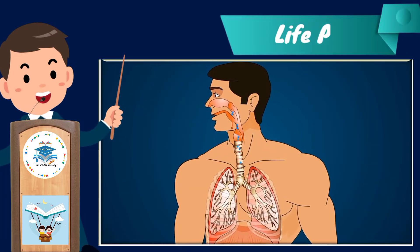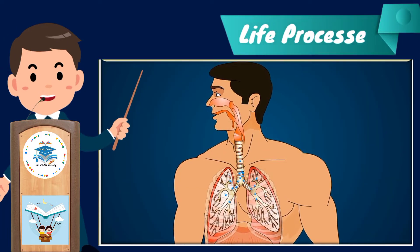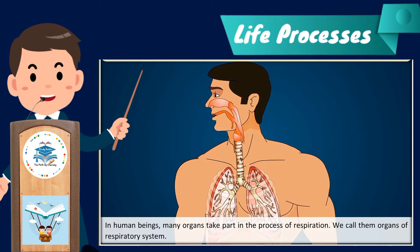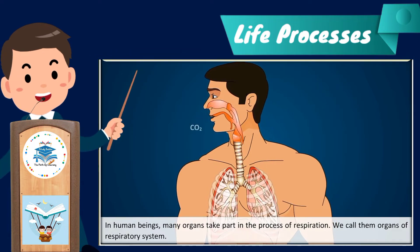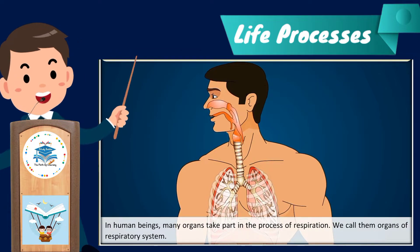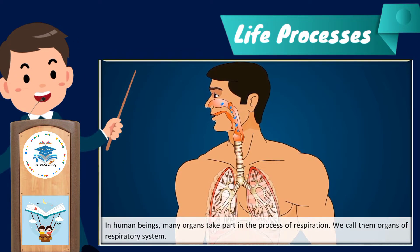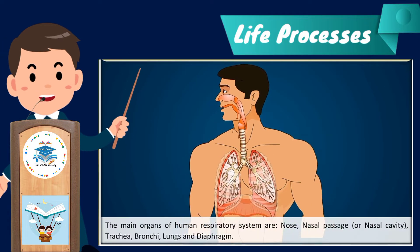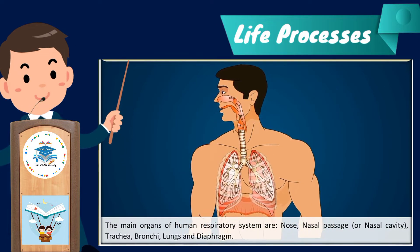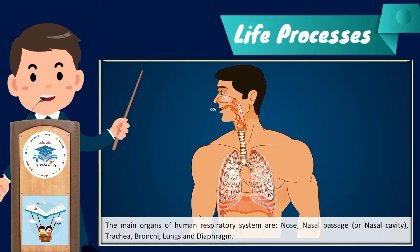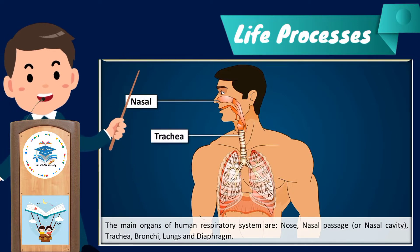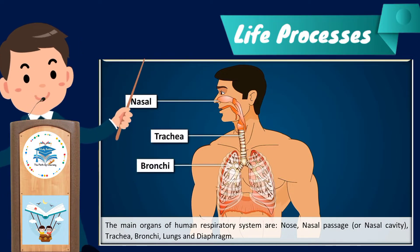In human beings, many organs take part in the process of respiration. We call them organs of the respiratory system. The main organs of the human respiratory system are the nose, nasal passage or nasal cavity, trachea, bronchi, lungs, and diaphragm.